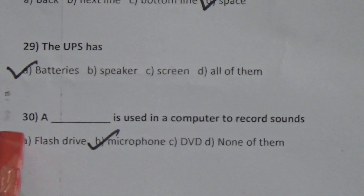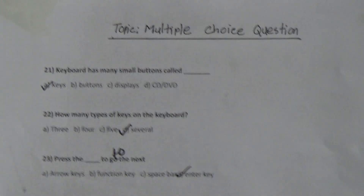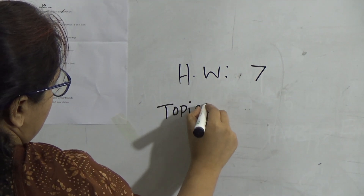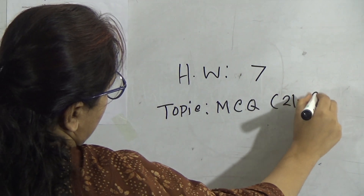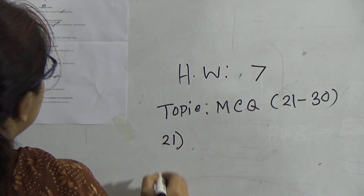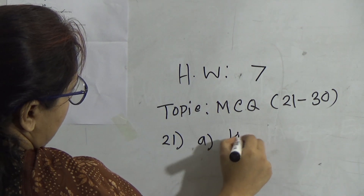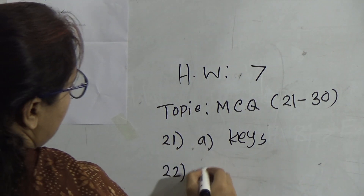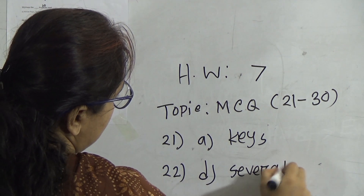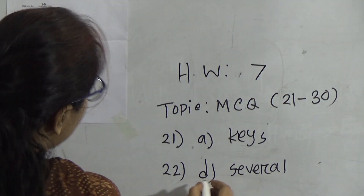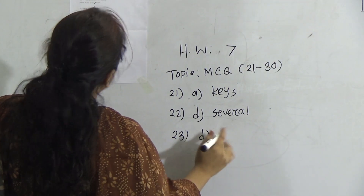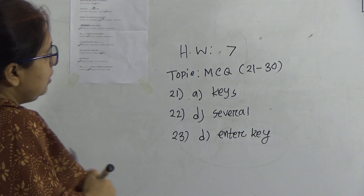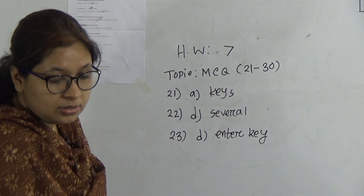Your homework is questions 21 up to 30 and you have to write only your answers. For example: 21 — option A is correct. 22 — how many types of keys on the keyboard — correct option D, several. 23 — correct option is enter key. Write only the correct answer for each question from 21 to 30.